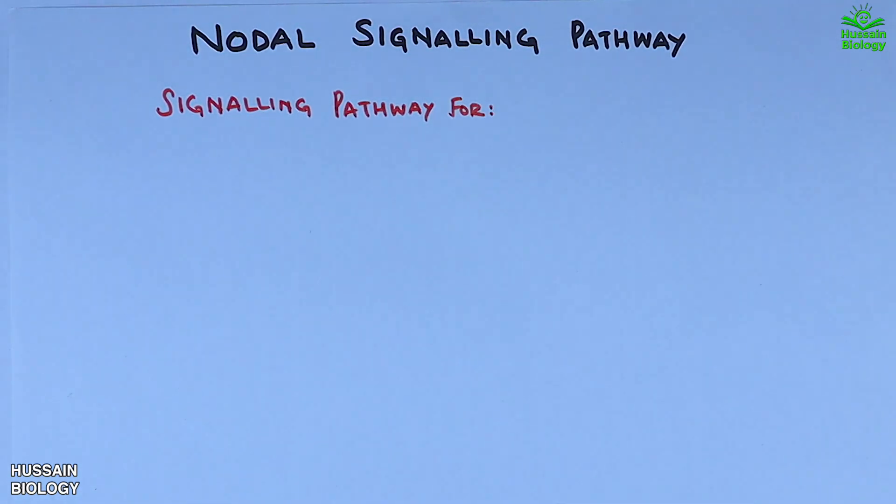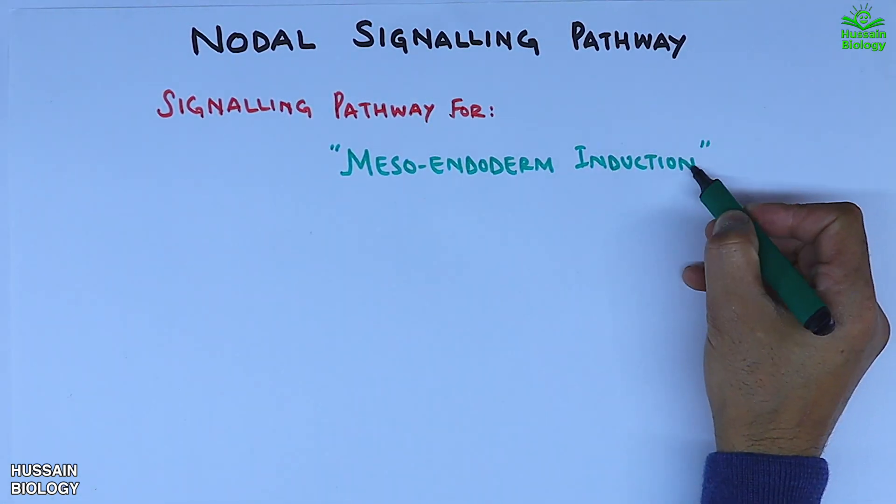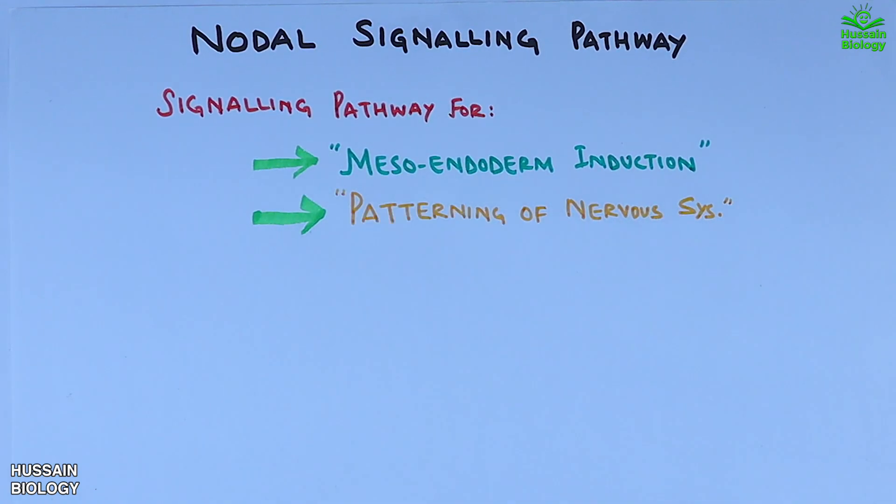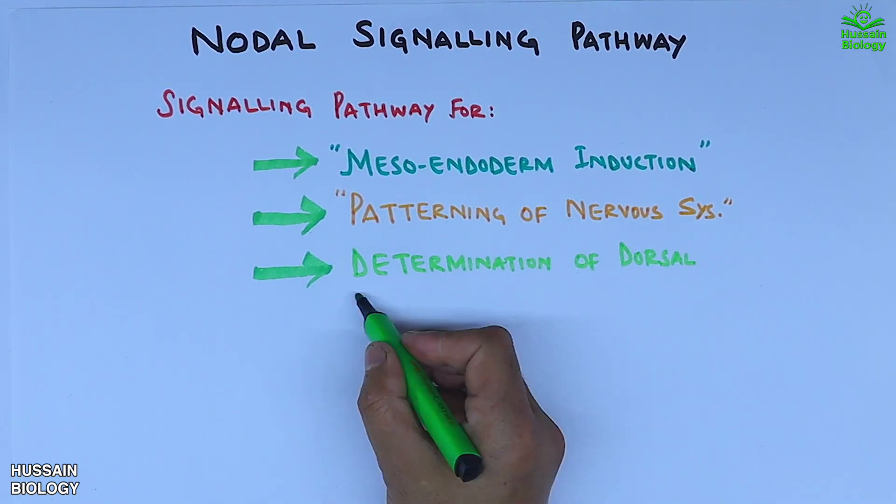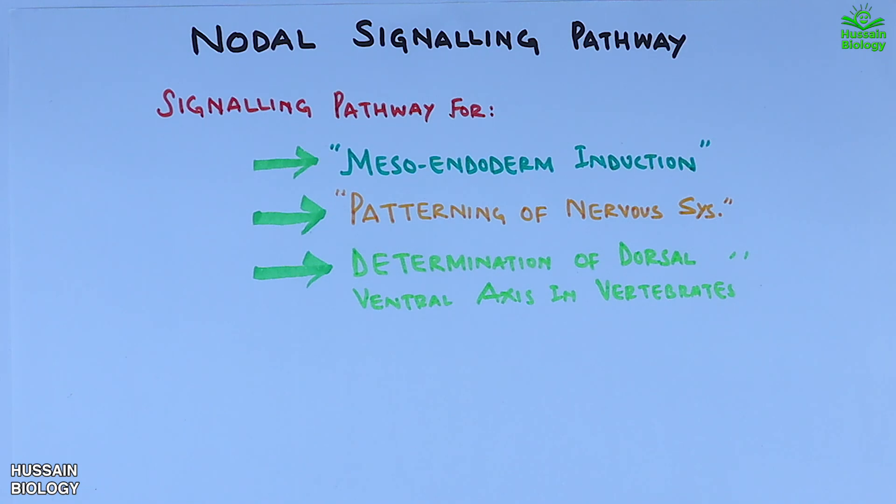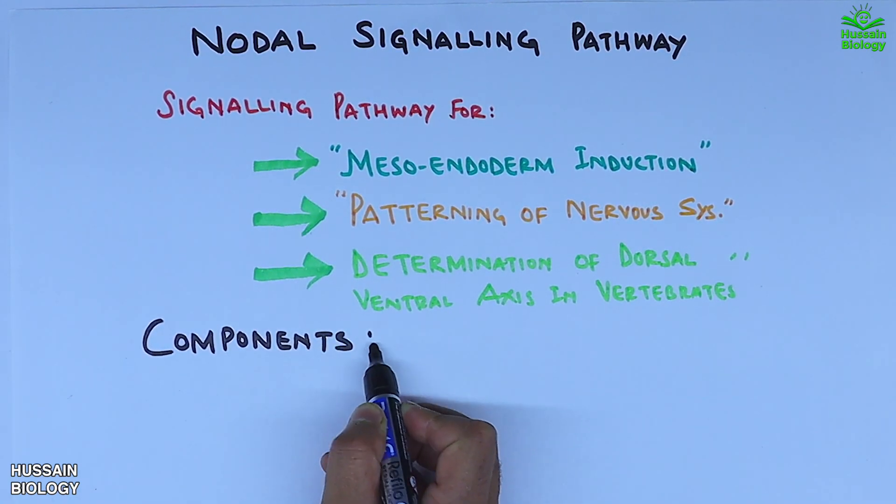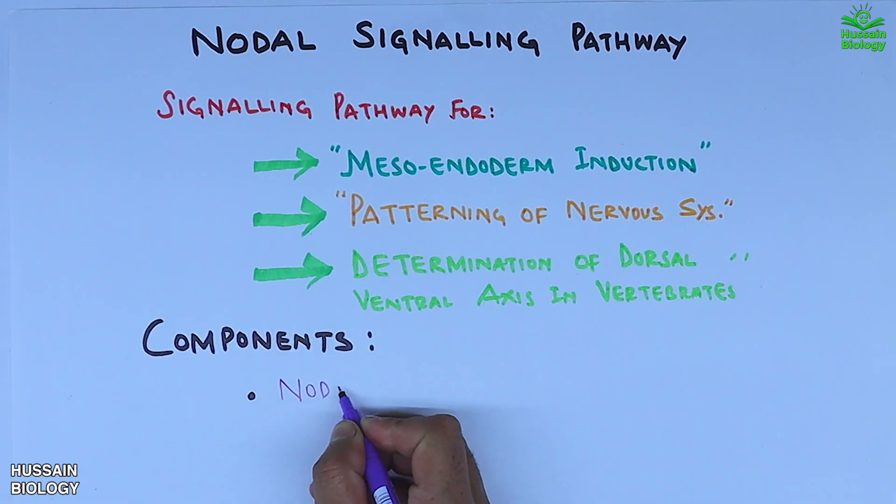In this video, we'll be discussing the nodal signaling pathway. This signaling pathway drives mesoendoderm induction, patterning of the nervous system, and determination of the dorsal-ventral axis in vertebrates. The components of the nodal signaling pathway include nodal protein